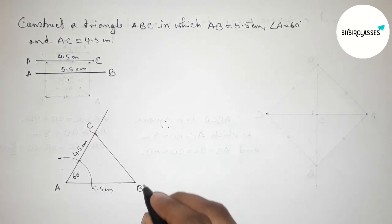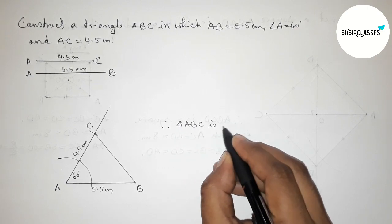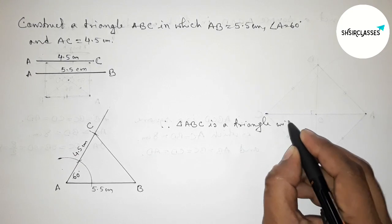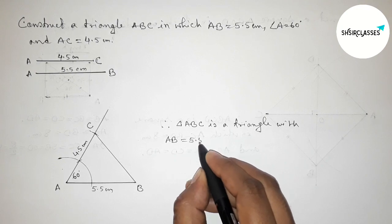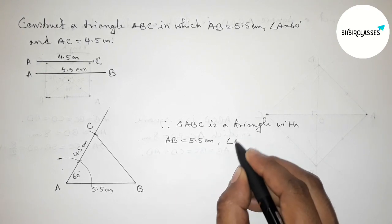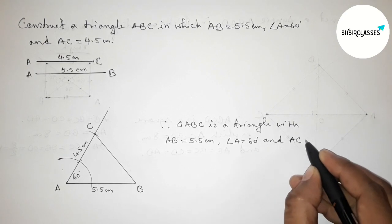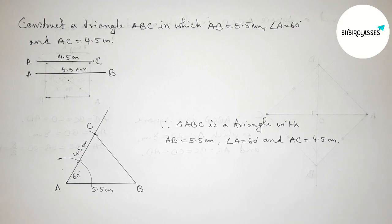Therefore, triangle ABC is constructed with AB equals 5.5 centimeters, angle A equals 60 degrees, and AC equals 4.5 centimeters. That's all. Thanks for watching. If this video is helpful to you, please share it with your friends.